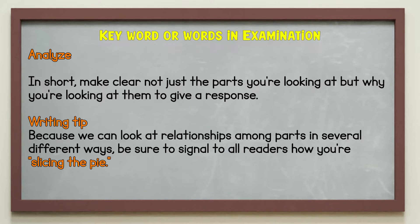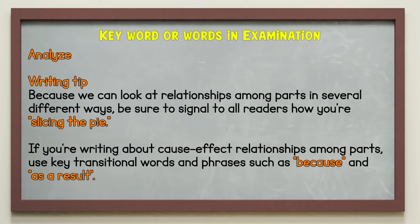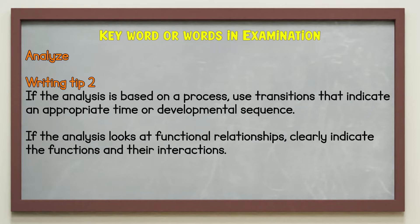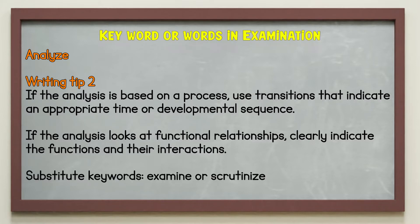Writing tip: because we can look at relationships among parts in several different ways, be sure to signal to readers how you are slicing the pie. If you are writing about cause-effect relationships, use key transitional words and phrases such as because and as a result. If the analysis is based on a process, use transitions that indicate an appropriate time or developmental sequence. If the analysis looks at functional relationships, clearly indicate the functions and their interactions. Substitute keywords for analyze are examine or scrutinize.